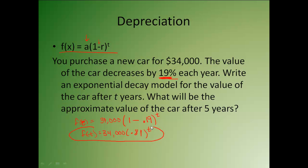So here is my model for this particular car depreciating at 19%. Then the second part says, what will be the approximate value of the car after 5 years? So now I can go ahead and plug in that 5 for the t. So I'm going to have 34,000 times 0.81 raised to the 5th power. And when I do that, the car is going to be worth about $11,855 after 5 years.